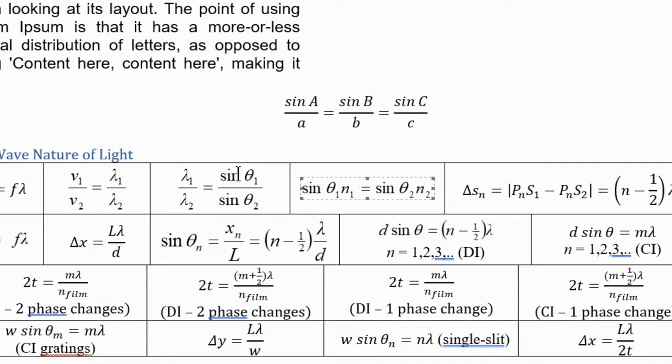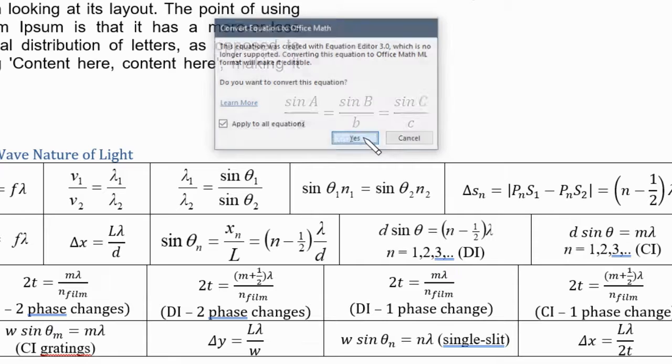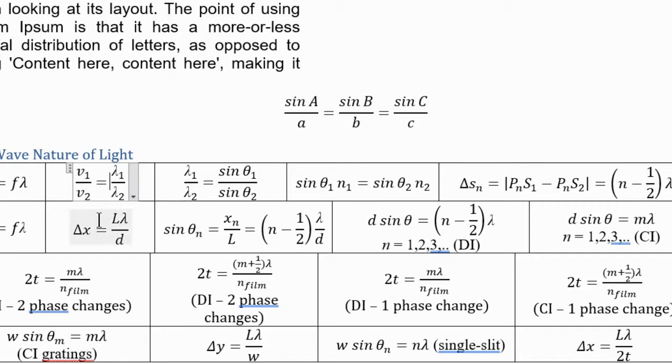So I guess I'll have to go through and I'll have to convert all of these. But now this is an editable equation. What if I double-click on it? I got this new box. This equation was created with equation editor 3, which is no longer supported. Converting it will make it editable. Do you want to convert this equation? Aha! Apply to all equations. Yes. I want to apply that to all my equations. I say yes.